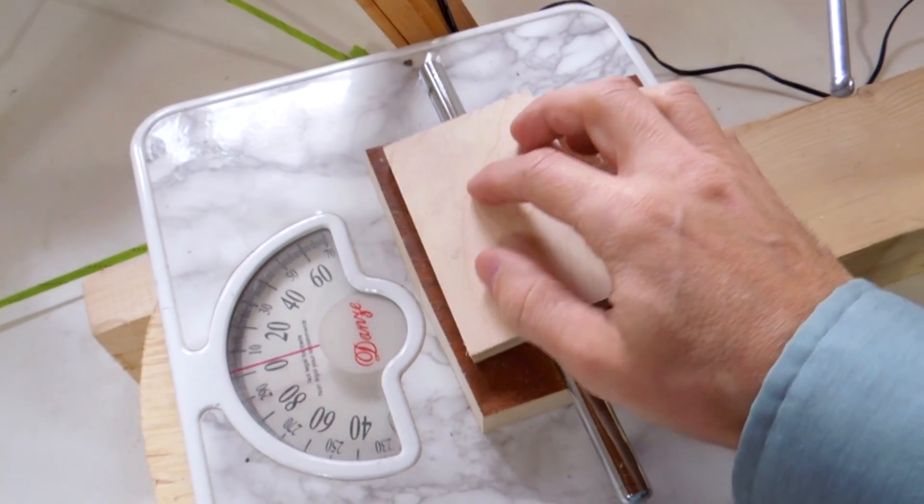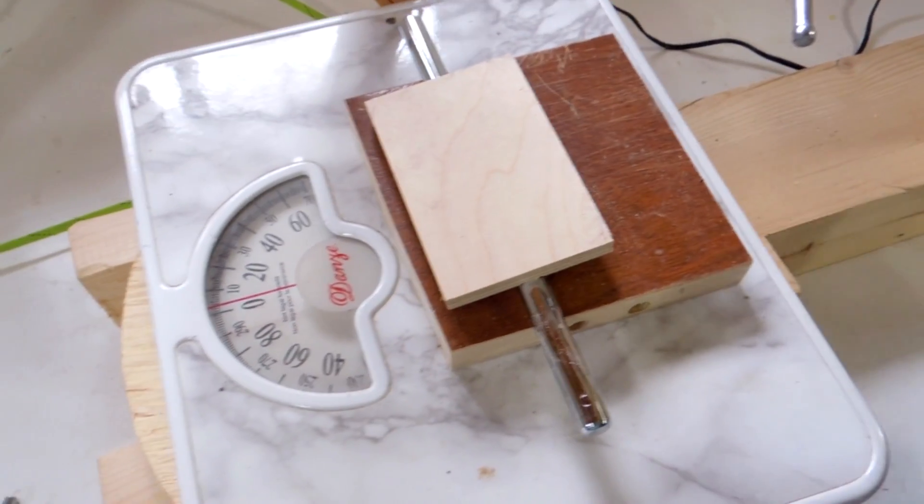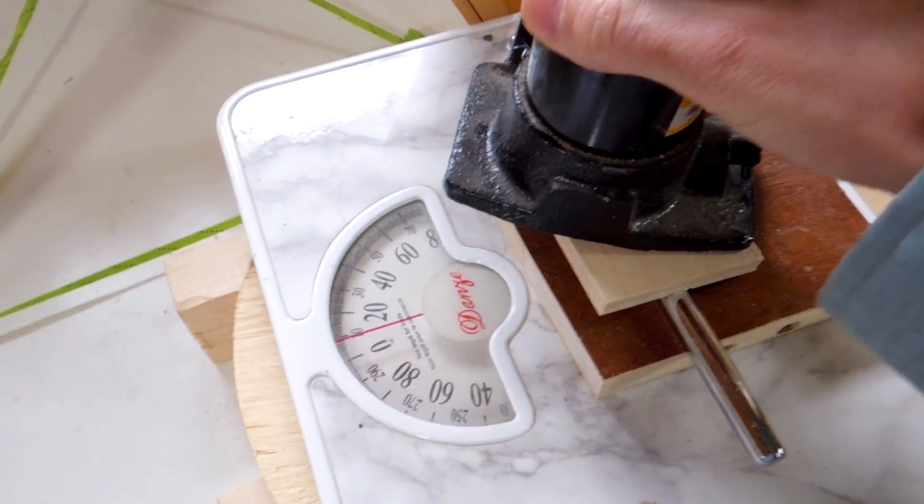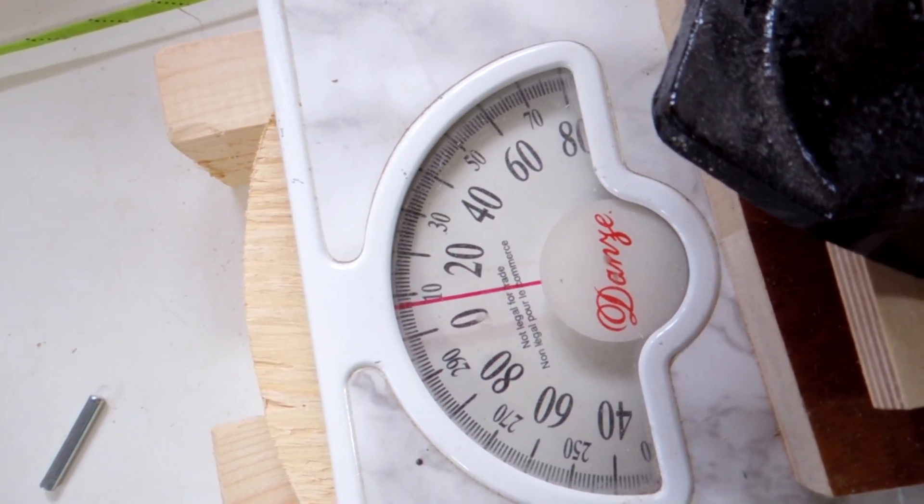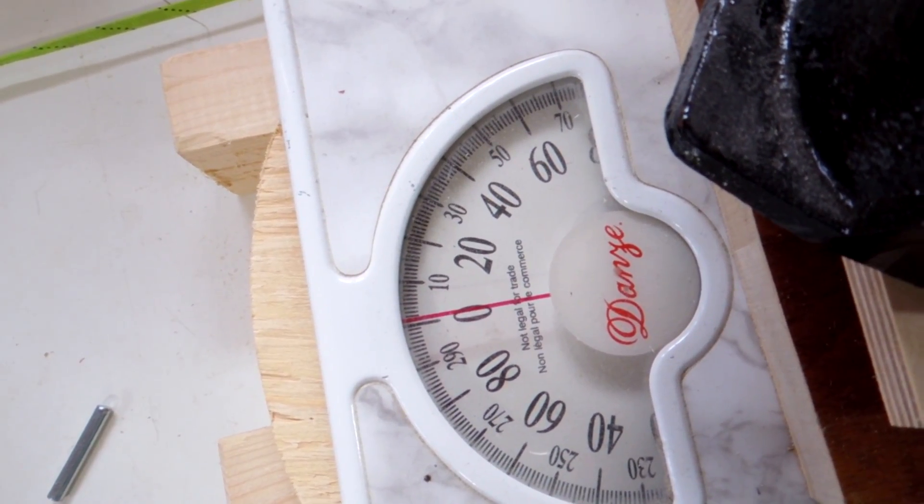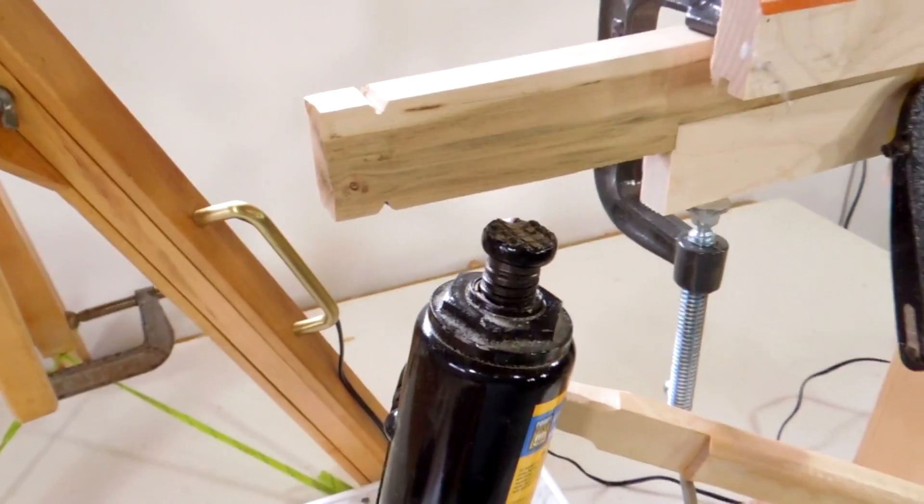So I got my bathroom scale here, and I've got a pivoting thing for the jack. And put that on here. And the jack weighs a few pounds, so I'm just gonna adjust the zero to compensate for the jack. So when there's zero, there's no force.